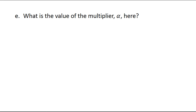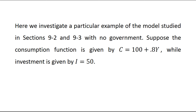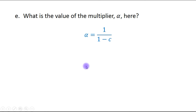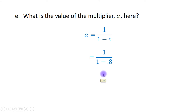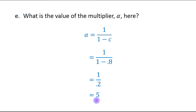Next part: what is the value of the multiplier alpha here? We know the multiplier equals 1 divided by (1 minus MPC). In our case MPC is 0.8, so the multiplier equals 1 divided by (1 minus 0.8), which is 1 divided by 0.2, which equals 5. So the value of the multiplier is 5.